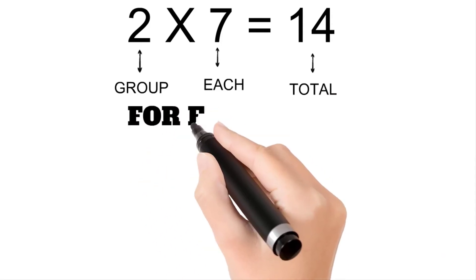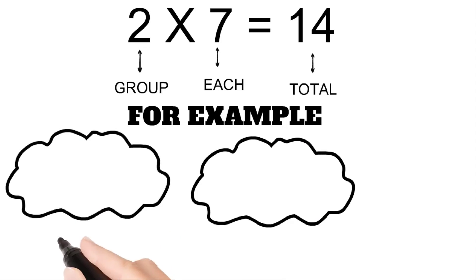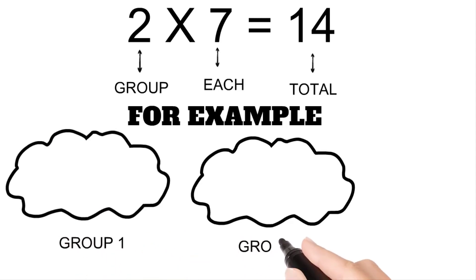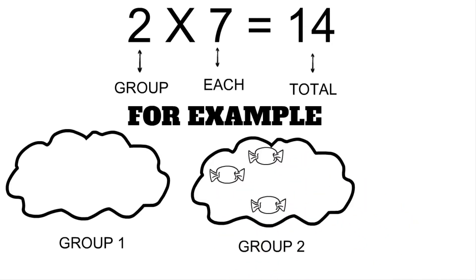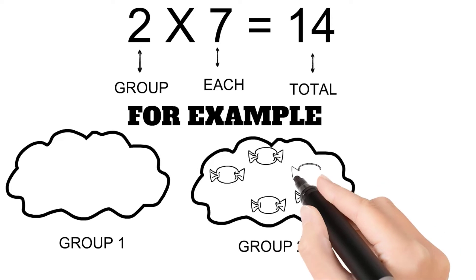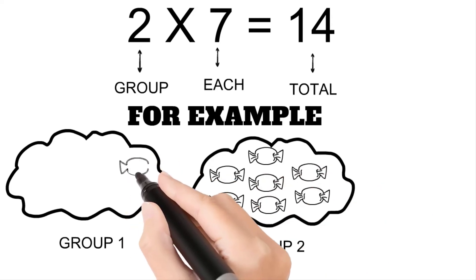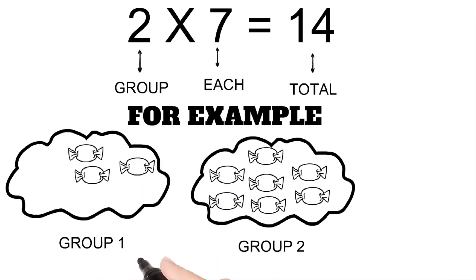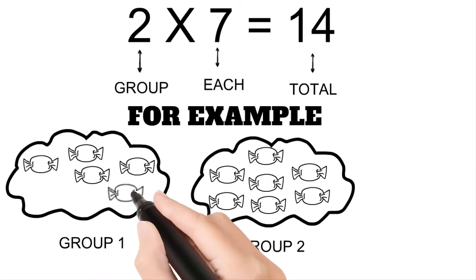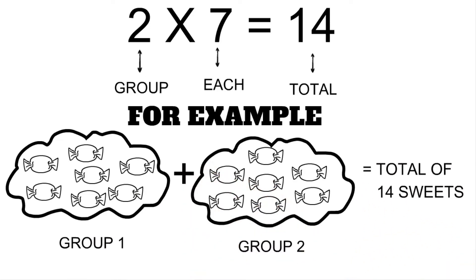Let's see some examples. We have two groups — group one and group two. Group two has seven sweets, and group one also has seven sweets.